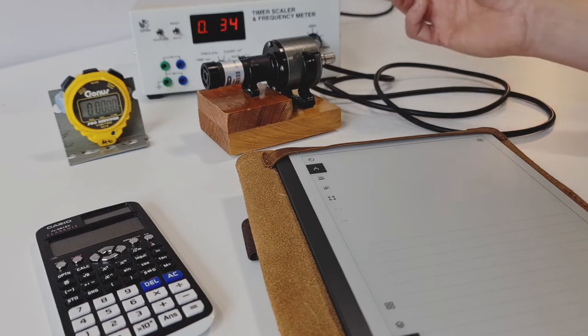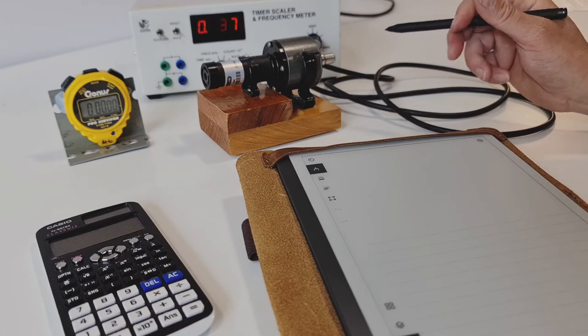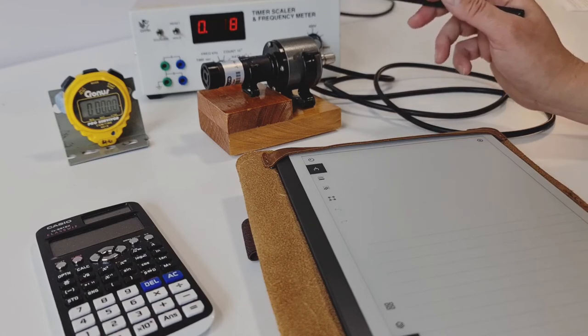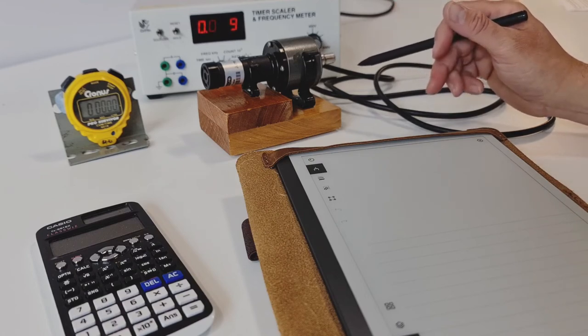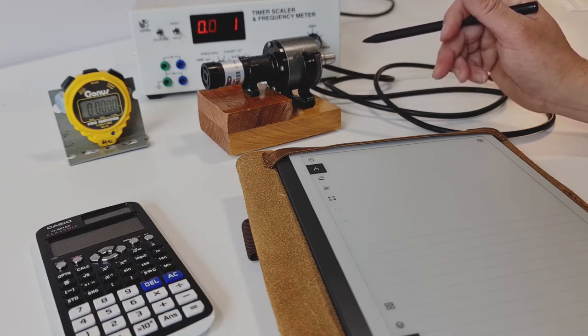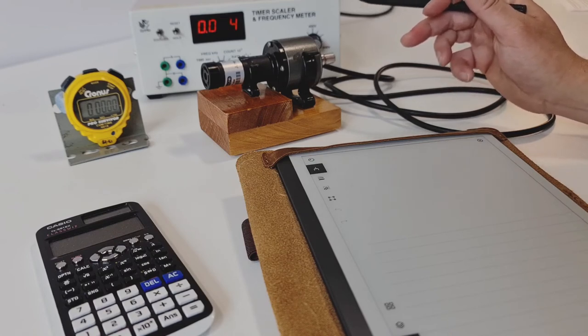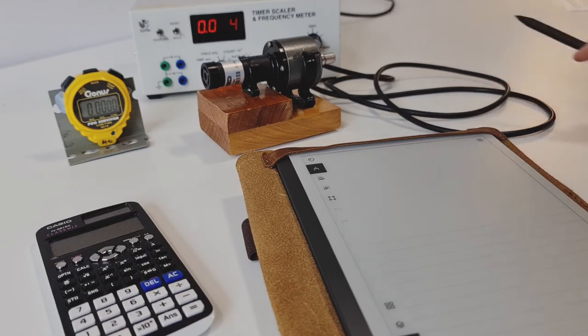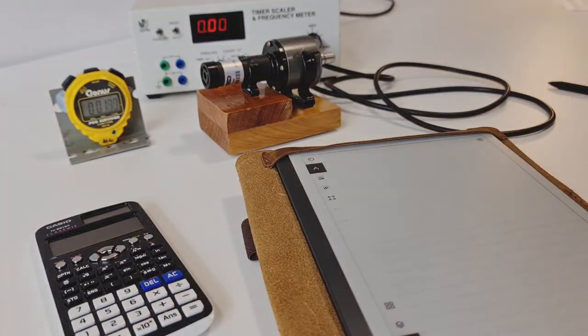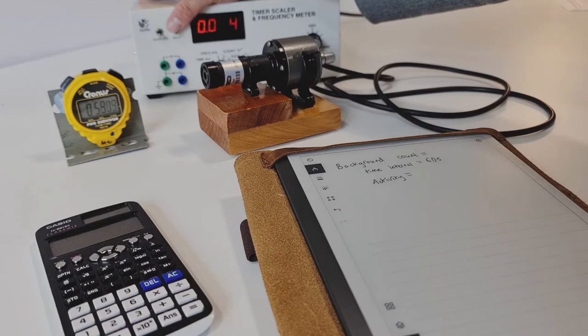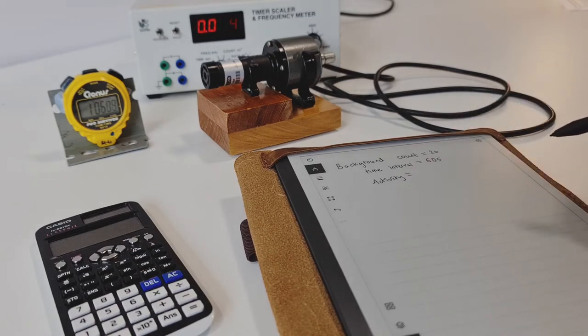This radiation is the background radiation. We must account for the background radiation before we even start to think about what the alpha particle is doing. The way we're going to do that is we're going to time for one minute and see how many instances of radiation there were within that one minute. I'll start my stopwatch and reset the clock. Three, two, one. And off they go.